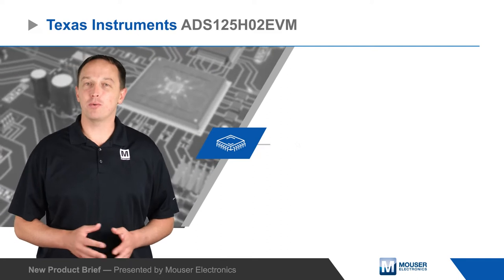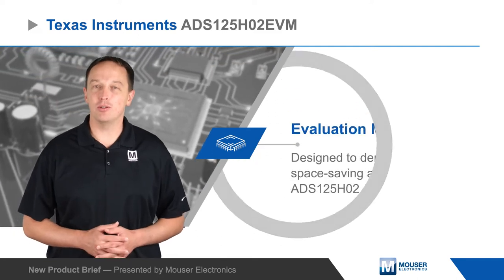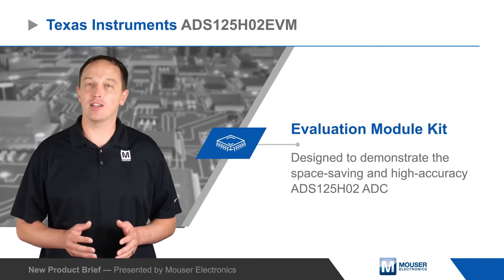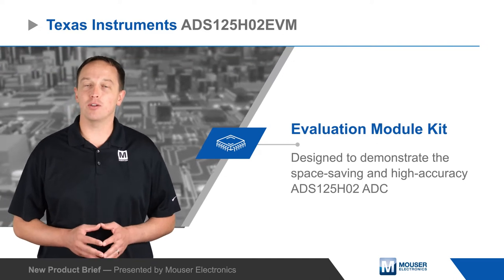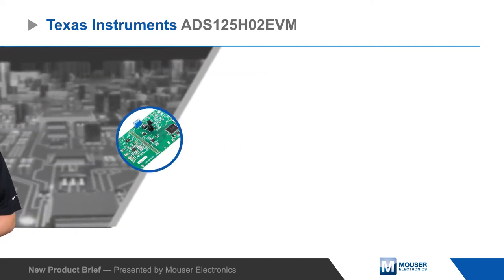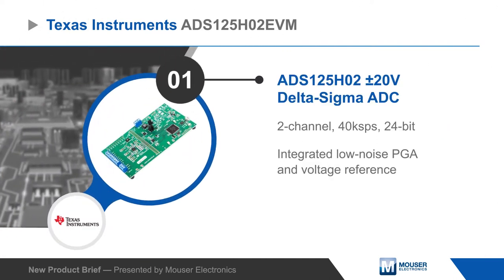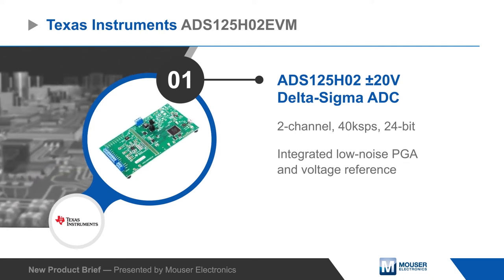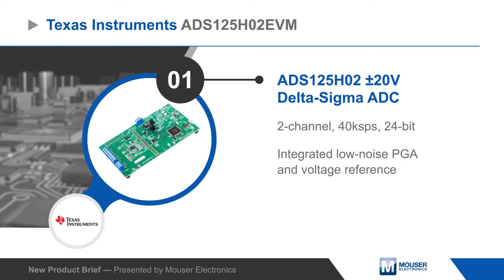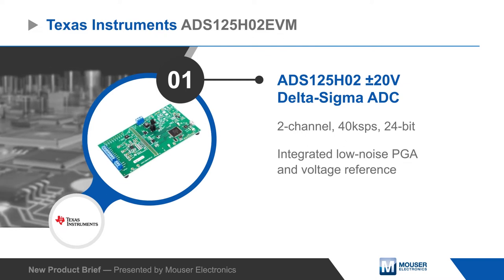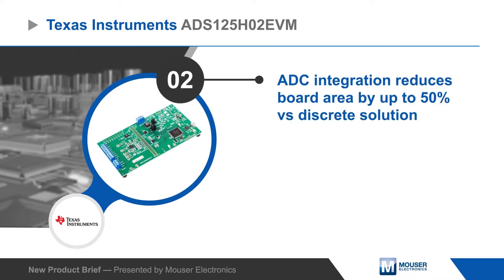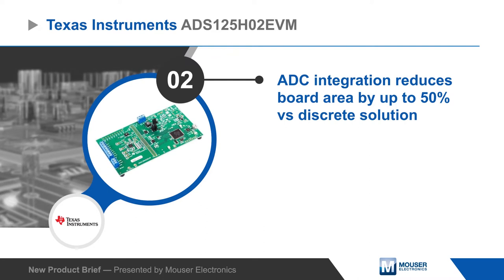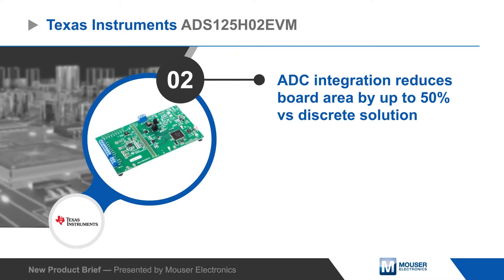Texas Instruments ADS125H02 EVM is designed to demonstrate the space-saving and high-accuracy ADS125H02 ADC. The ADC is a plus or minus 20 volt Delta-Sigma ADC with a low-noise programmable gain amplifier, internal reference, clock oscillator, and out-of-range monitoring. This level of integration simplifies layout and reduces board area by up to 50 percent compared to a discrete design.